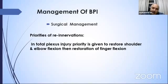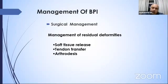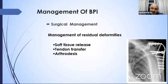The priorities for re-innervation in total plexus injury are: first, regaining shoulder movement — especially flexion; then elbow flexion; and last, restoration of finger flexion. Management of residual deformities includes soft tissue releases of joint contractures, tendon transfers for residual peripheral nerve deficits, and arthrodesis. Shoulder arthrodesis is a salvage procedure for an unstable shoulder, but functioning trapezius and scapular muscles are required to compensate for shoulder movement.